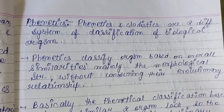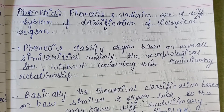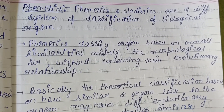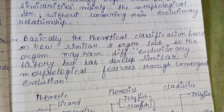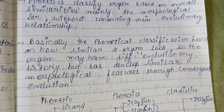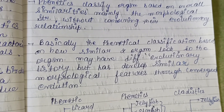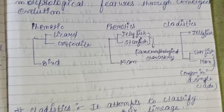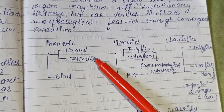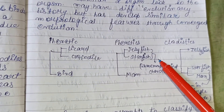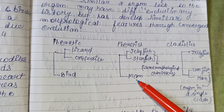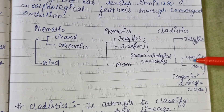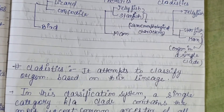Phenetics and cladistics are two different systems of classification. Phenetics classifies organisms based on overall similarities — mainly morphological structure — without considering evolutionary relationships or common ancestry. Phenetic classification is based on how similar two organisms look; organisms may have different evolutionary histories but develop similar morphological features through convergent evolution. For example, according to phenetics, lizards and crocodiles are close while birds are distant, and jellyfish and starfish are close while humans are distant.